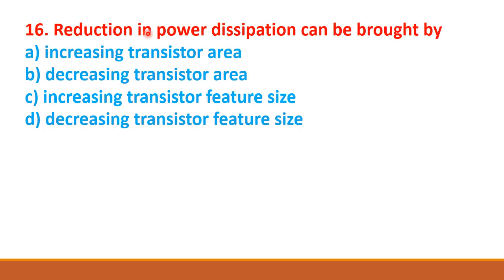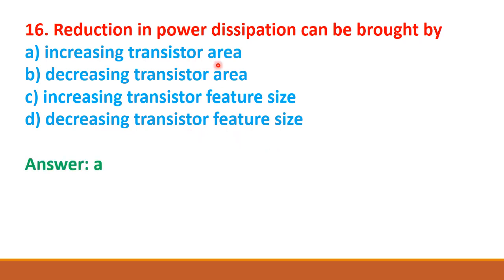Reduction in power dissipation can be brought by — option A: increasing transistor area, option B: increasing transistor area, option C: increasing transistor feature size, option D: decreasing transistor feature size. The correct answer is option A: increasing transistor area.